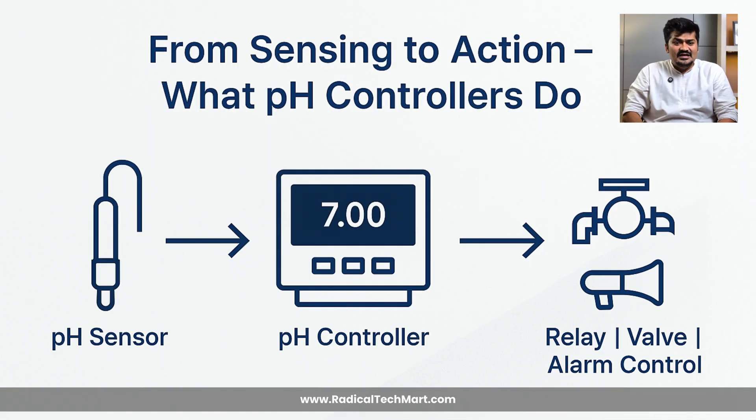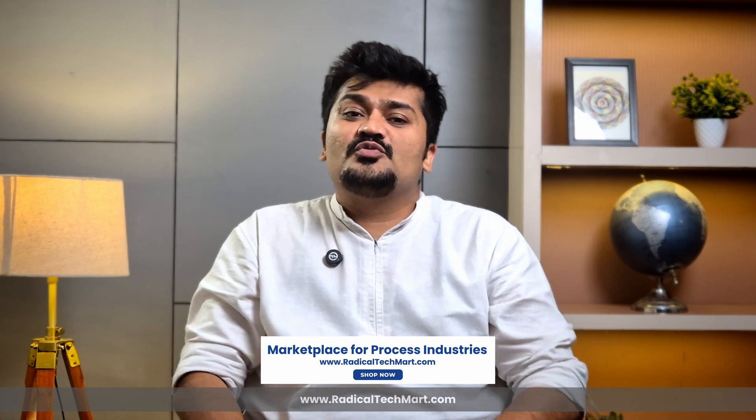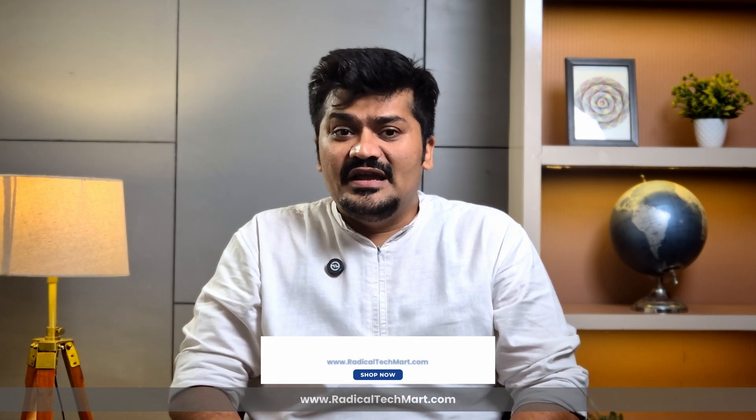Let's start with what is a pH controller. A pH controller receives the pH signal, typically in the form of a sensor or a transmitter, and then makes the decision based on a preset range or set point. It automatically turns dosing pumps on or off, opens or closes dosing valves, triggers alarms or shuts down if pH goes out of range. Unlike a transmitter that just displays the data, a controller actually controls the process.